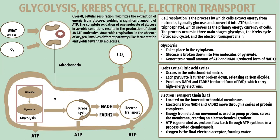Cell respiration is a process by which cells extract energy from nutrients — typically glucose — and convert it into ATP, adenosine triphosphate, which serves as the primary energy currency of cells. The process occurs in three main stages: glycolysis, the Krebs cycle, and the electron transport chain. Glycolysis takes place in the cytoplasm, whereby glucose is broken down into two molecules of pyruvate and generates a small amount of ATP and NADH. The Krebs cycle is a citric acid cycle that occurs in the mitochondrial matrix, where each pyruvate is further broken down releasing carbon dioxide, and it produces NADH and FADH₂, the reduced form of FAD which carries high-energy electrons.